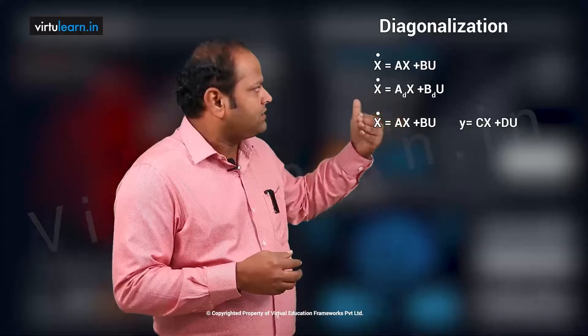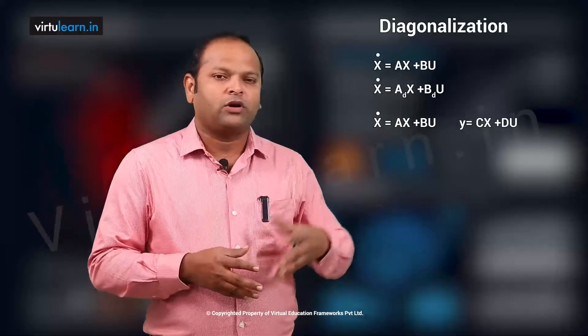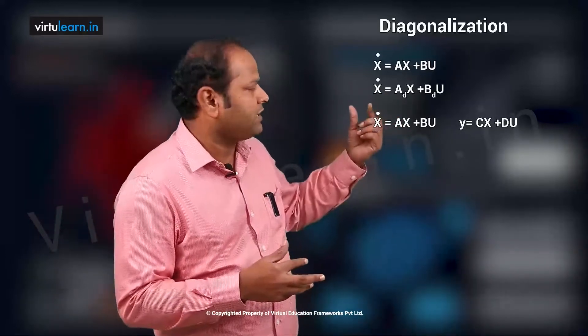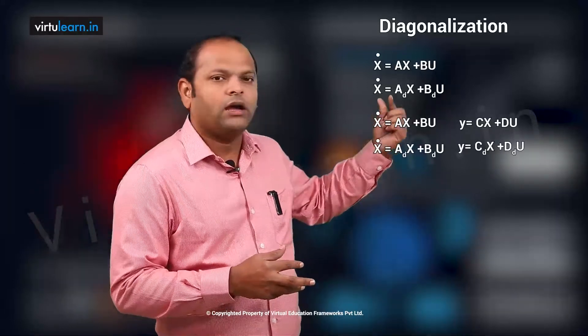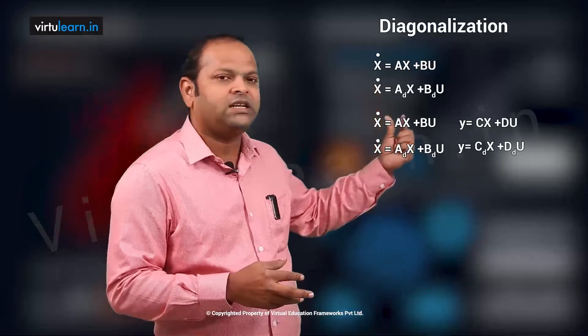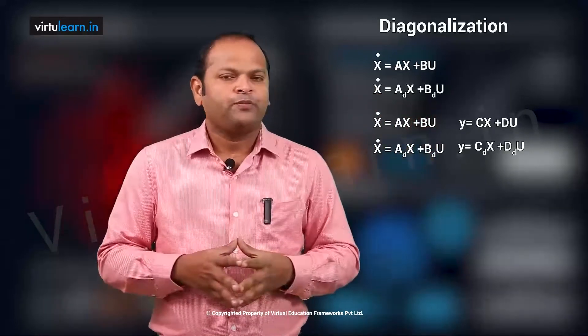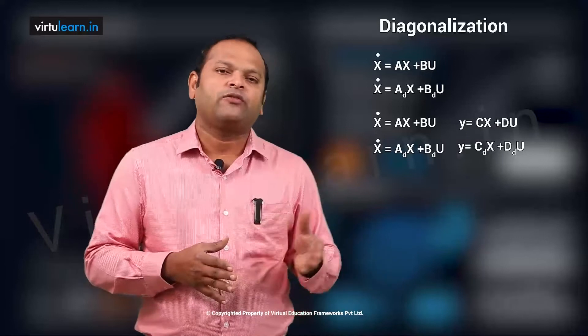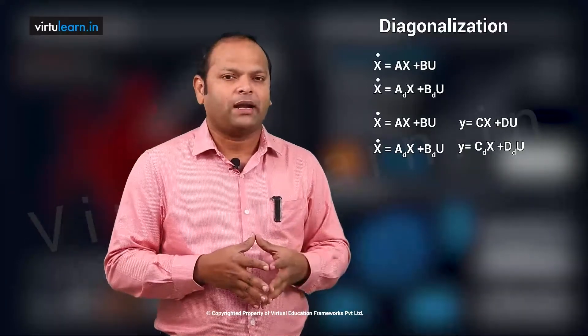Now let us take the new model, the modified model would be in the form of x dot is a_d x plus b_d u and y is equal to c_d x plus d_d u. The d stands for the diagonalization. So after diagonalization, what will be the matrix?